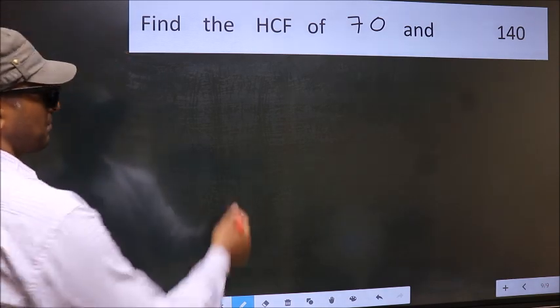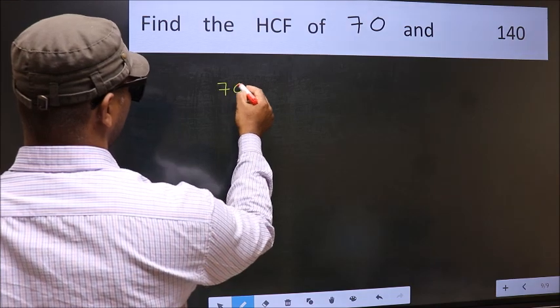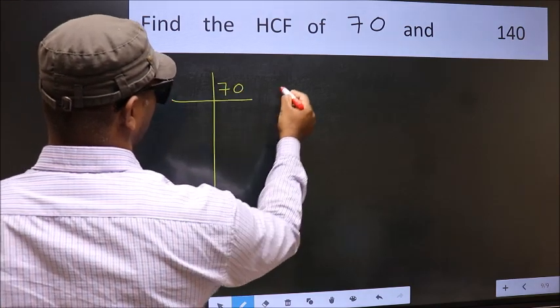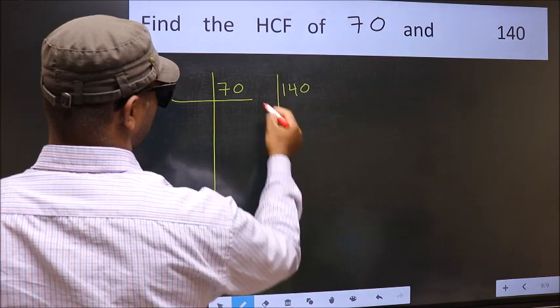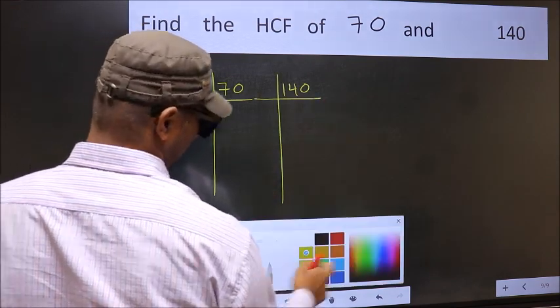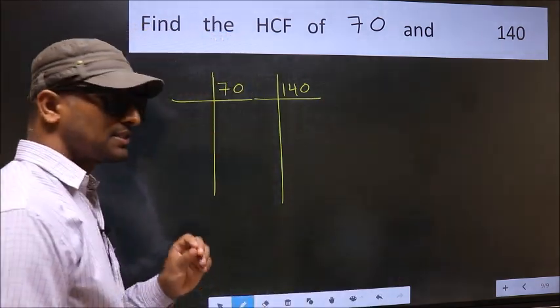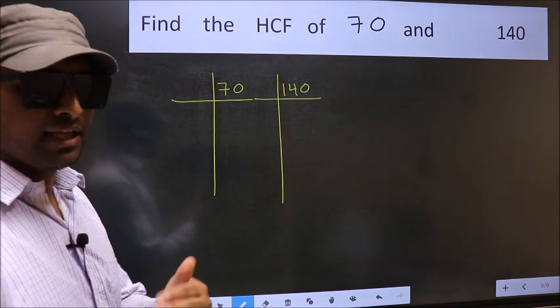What I mean is 70 and 140. This is step 1. Next.